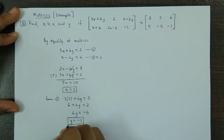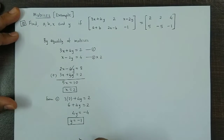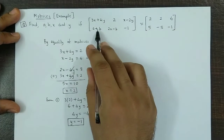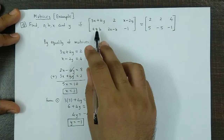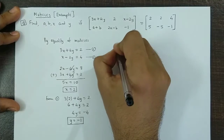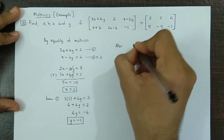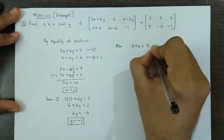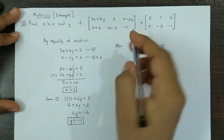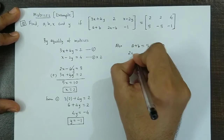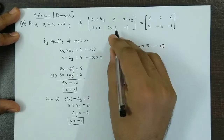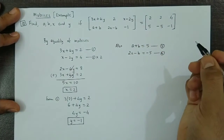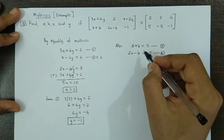We have obtained X and Y. Now we move on to finding A and B. Equating the corresponding elements, we get A plus B equals 5 — call this equation 3 — and 2A minus B equals minus 5 — call this equation 4.